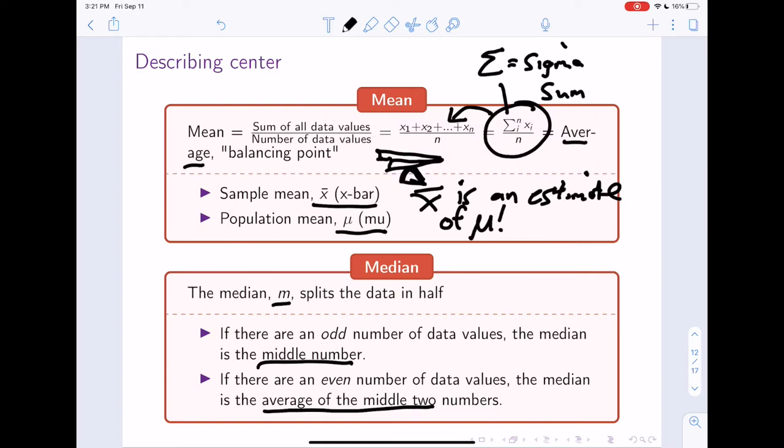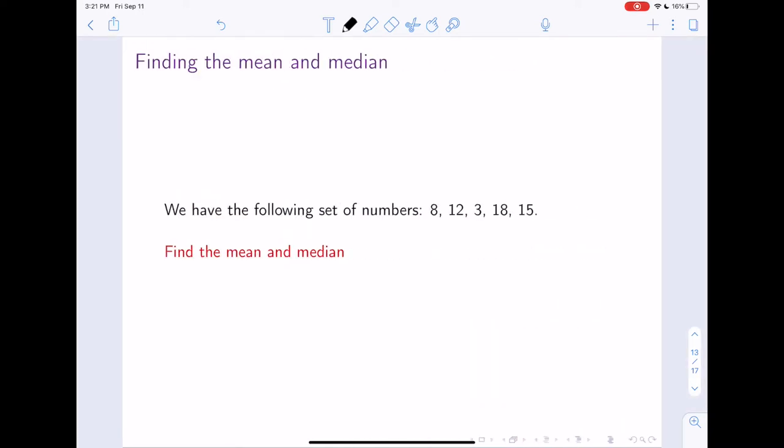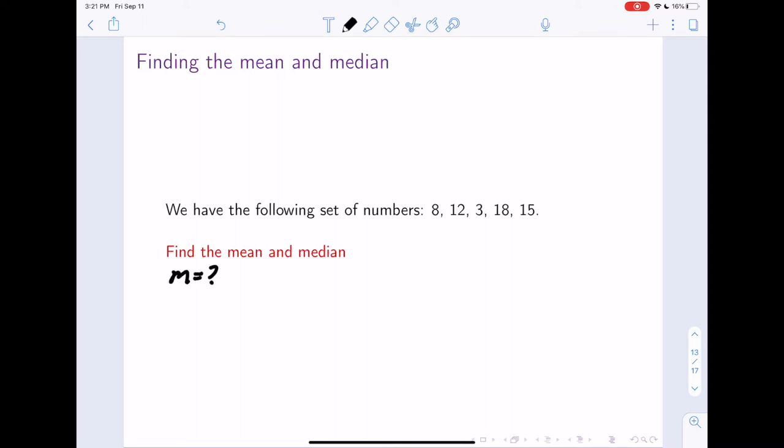Let's calculate these things. We have the following set of numbers: 8, 12, 3, 18, and 15. Let's find the mean and the median. Let's find the median first. The first thing we want to do to calculate the median is put these in ascending or descending order. So I'm going to write 3, 8, 12, 15, 18.